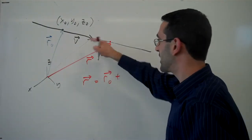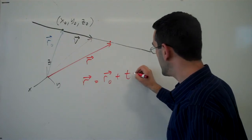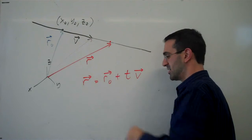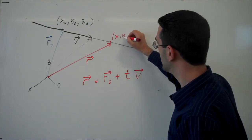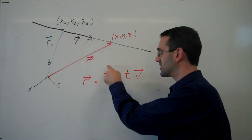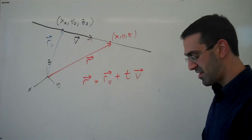And if we scale that vector v by t, then any vector r pointing to some point x, y, z on the line can be represented as r naught plus t times v.